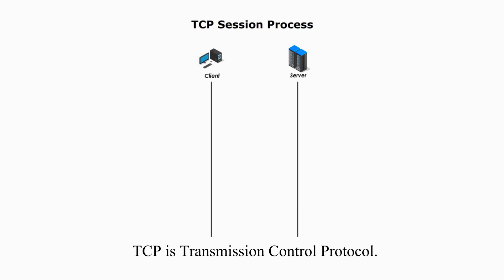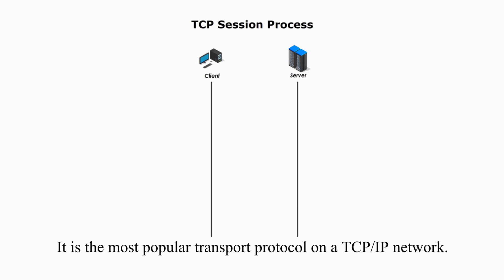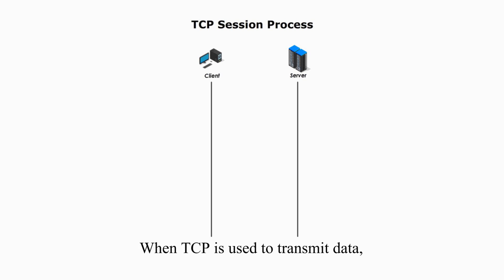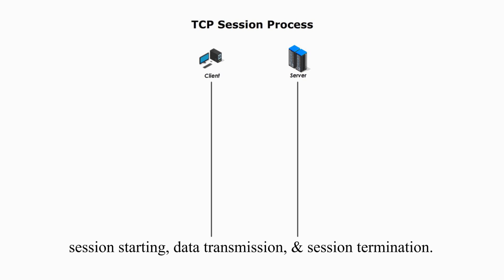TCP is Transmission Control Protocol. It is the most popular transport protocol on a TCP/IP network. TCP is a connection-oriented and reliable protocol. When TCP is used to transmit data, it will include three stages: session starting, data transmission, and session termination or closing.